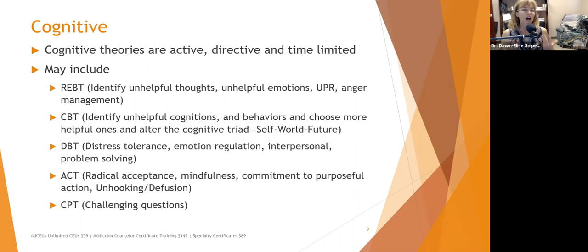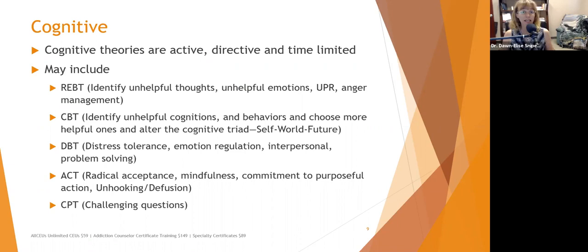Cognitive theories are active, directive, and time-limited — helpful for a huge range of issues, except with people who have dementia, are in an active psychotic episode, have fetal alcohol spectrum issues, or are very young children. REBT — rational emotive behavior therapy — was one of the first cognitive approaches. Its goals are to identify unhelpful thoughts and emotions, encourage unconditional positive regard, and address anger management, as anger is seen as an unhelpful emotion.